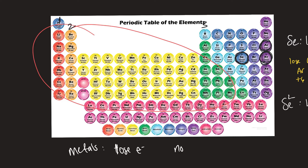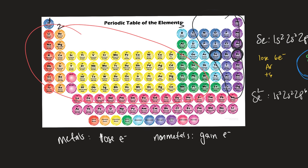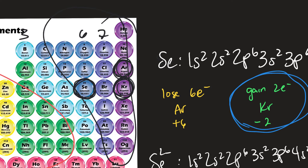Non-metals, when they become ions, typically gain electrons. Oxygen has six valence electrons, so it's easier to gain two than to lose six. Halogens all have seven valence electrons, so it's easier to gain one more than to lose seven. All of these elements are just trying to achieve a noble gas configuration.